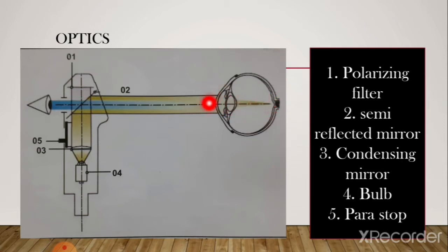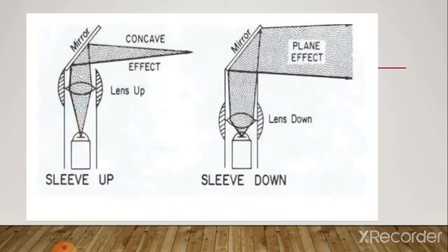Depending on the patient's refractive error, the focusing of the light rays varies. If the person has myopia, the light rays will focus in front of the retina. In hypermetropia, they focus behind the retina. The far point in myopia is between the patient and the examiner, while in hypermetropia the far point is behind the examiner.